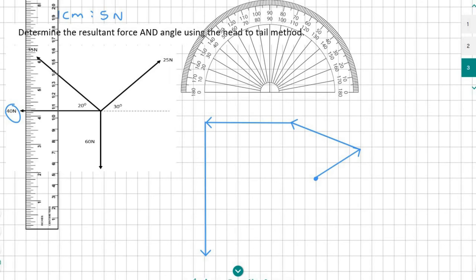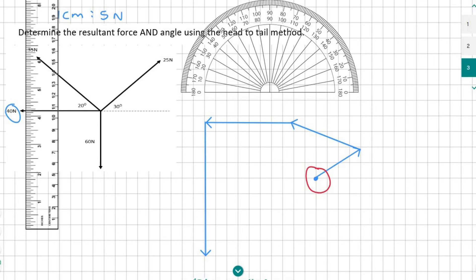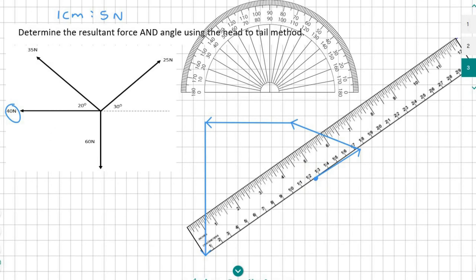We have now done all the forces and so to find the final result you need to start at the beginning again which is here, and you need to measure the length from there to the ending position. And so if I look at that length I'm getting about 12 and a half centimeters.